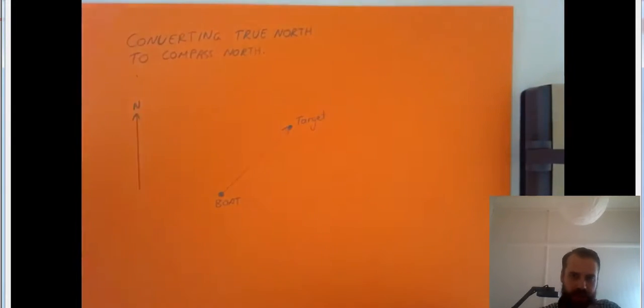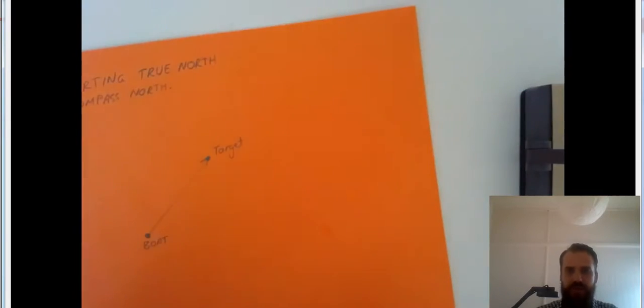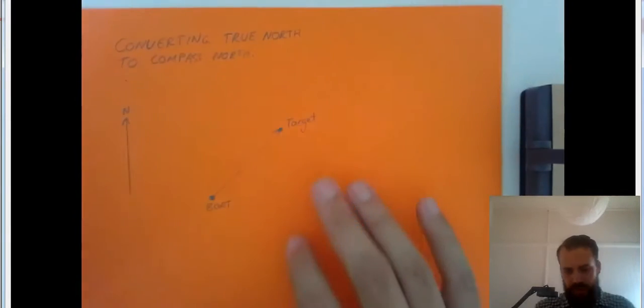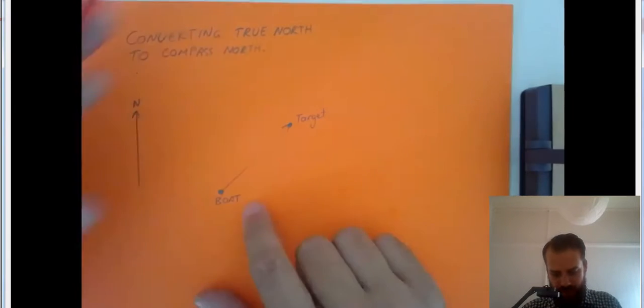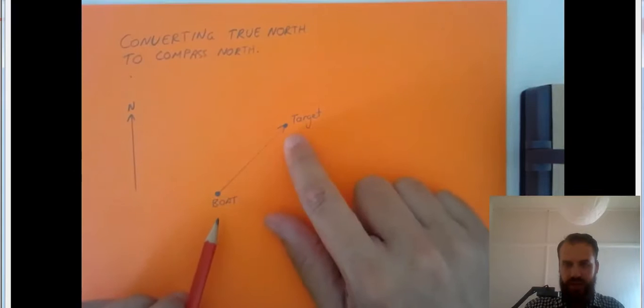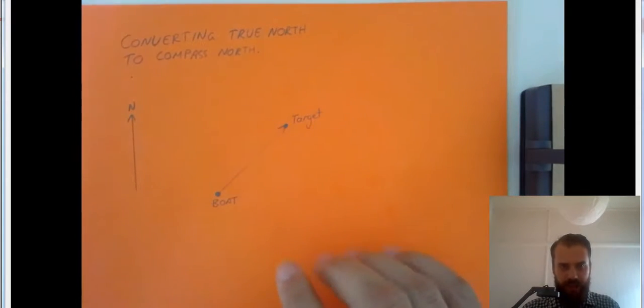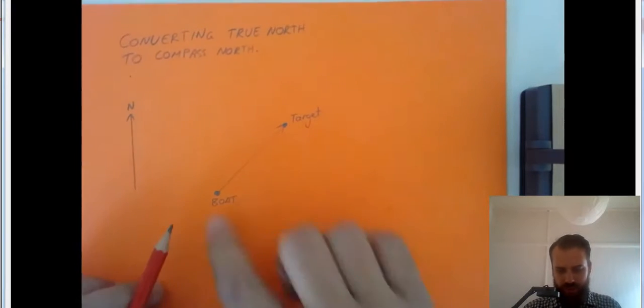But the problem is that our compass doesn't point towards the top of the apple, the compass that's going to guide us to where we're going. Here's our map, our boat wants to travel towards the target. Maybe it's the pier, maybe it's a good fishing spot, whatever it might be.